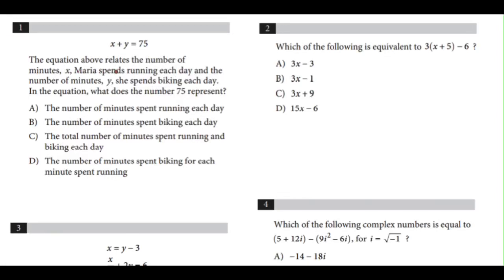Number 1. The equation above relates the number of minutes, x, Maria spends running each day, and the number of minutes, y, she spends biking each day. In the equation, what does the number 75 represent?